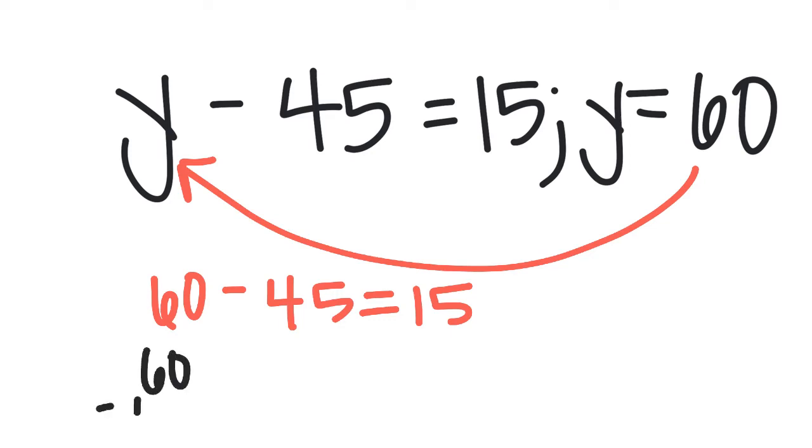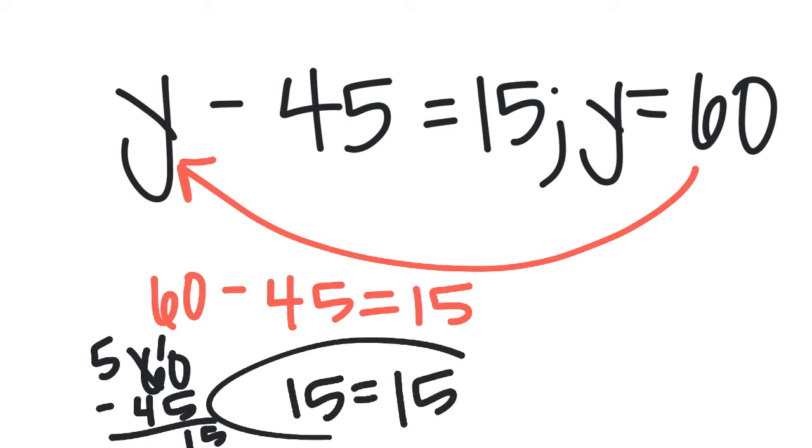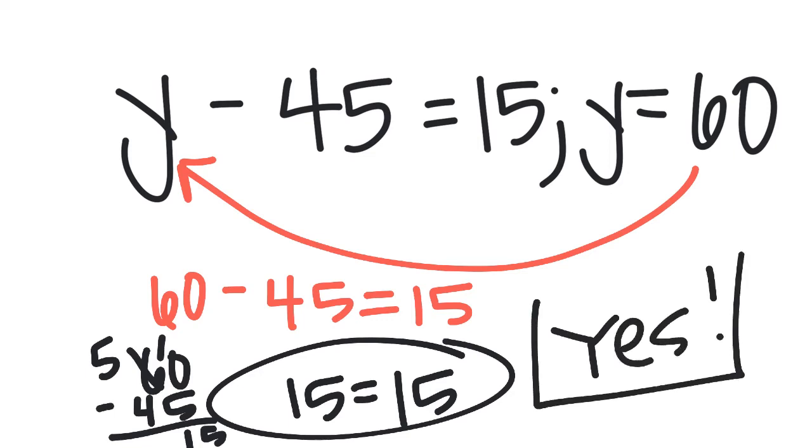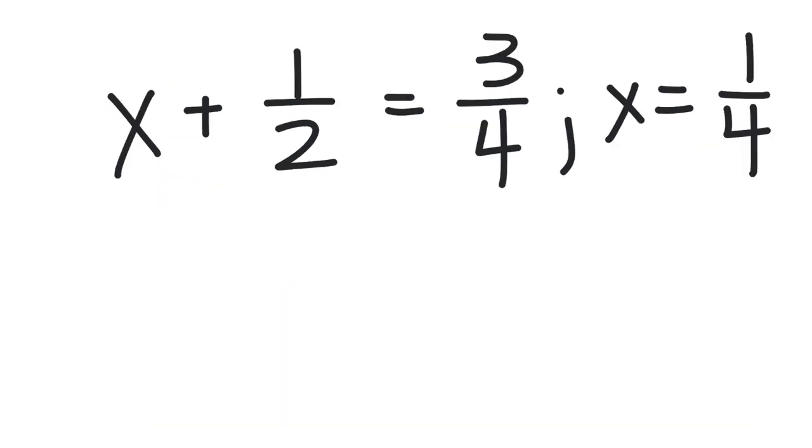So if I did 60 take away 45, I'm going to stack mine because that part just makes more sense to me. I'm going to cross out the six, make it a five, borrow that one over. So now I have 10 take away 5 is 5, and 5 take away 4 is 1. So what I found out is 15 is my solution, and 15 does equal 15. So my answer is yes, 60 is a solution for y minus 45 equals 15.